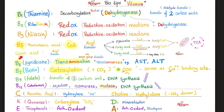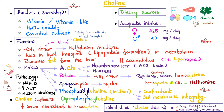Each vitamin has biochemical functions. Some play roles in redox reactions. Vitamin B6 is important for transamination — in fact, the ALT level in the blood measures the liver's ability to make alanine aminotransferase, a transamination reaction requiring vitamin B6 as a cofactor. So what's the function of choline? Methylation! Choline can donate methyl groups. Is choline a vitamin? It's more properly a vitamin-like substance, and it is water-soluble.